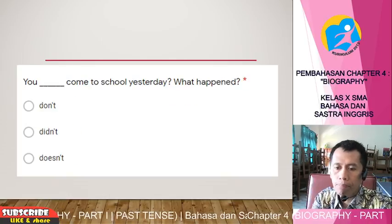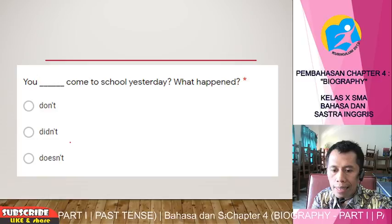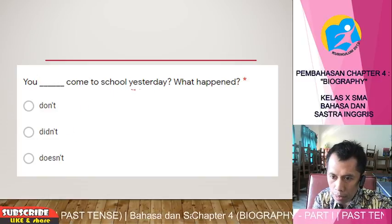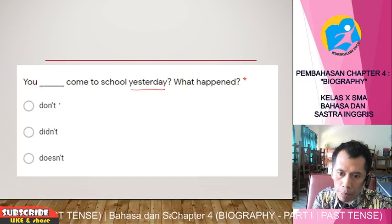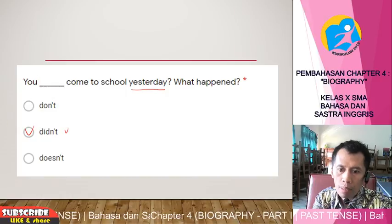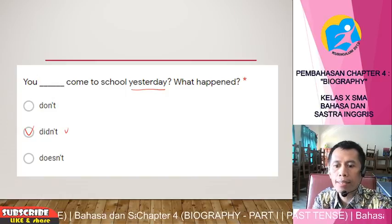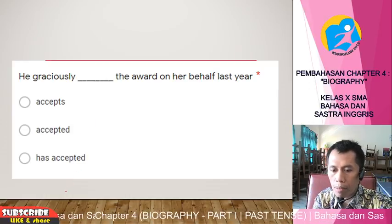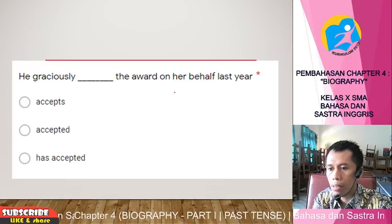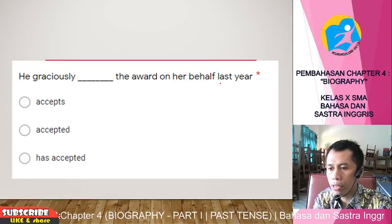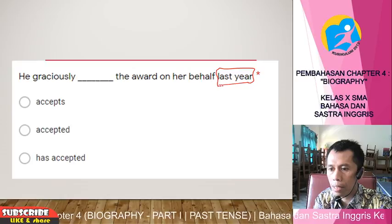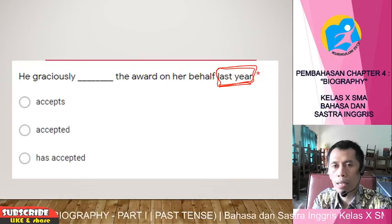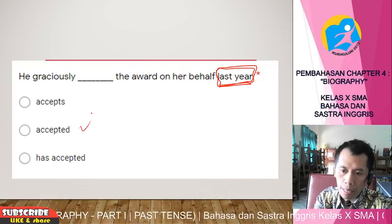Next: 'You don't/didn't come to school yesterday.' The word 'yesterday' means we use 'didn't,' not 'don't.' Next: 'He graciously accept/accepted/has accepted the award on her behalf last year.' 'Last year' indicates this happened in the past, so use verb 2 — 'accepted.'